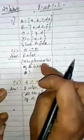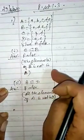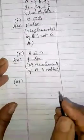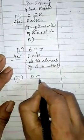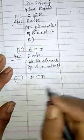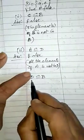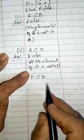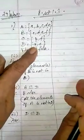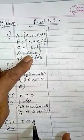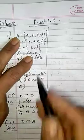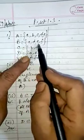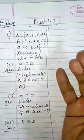In the first sum also you can write: all the elements of set C are not in set B. Now coming to the third one — D is a subset of B. So which is the smaller set? D. We have to check all the elements of D are in B. The first element of D is A. Is it in B? No.